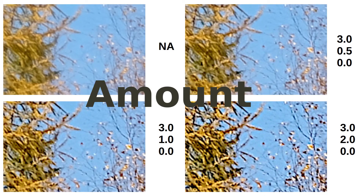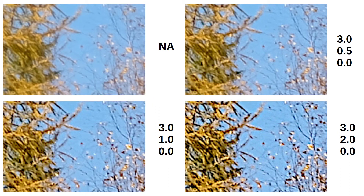Now let's look at the second parameter, the amount. This essentially multiplies your sharpening effect by some constant — small differences are exaggerated as you increase this slider. A typical normal value is 0.5. If you make it 0, you won't see any effect. If you push it to the right, you'll see what's in the bottom right, where the picture looks like a pencil drawing. Note that we use a rather large radius value of 3 and an unnaturally low threshold of 0 to exaggerate effects so we can see them better.